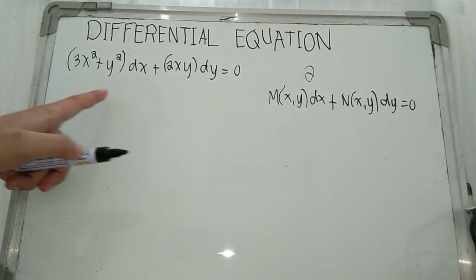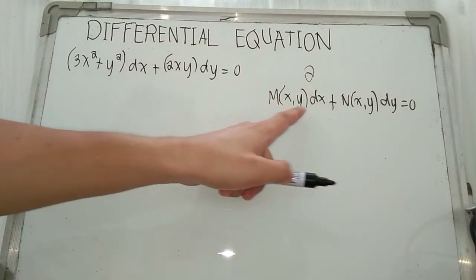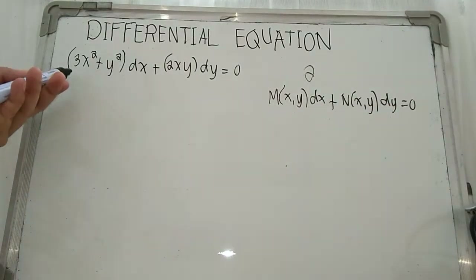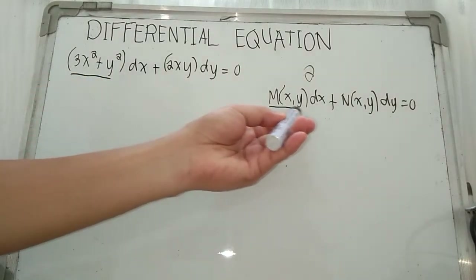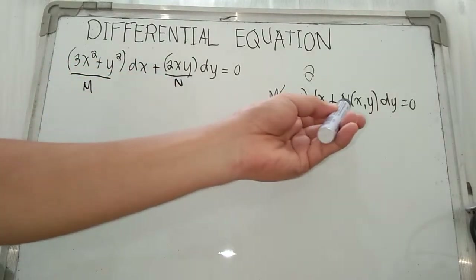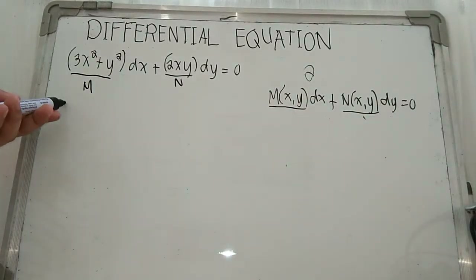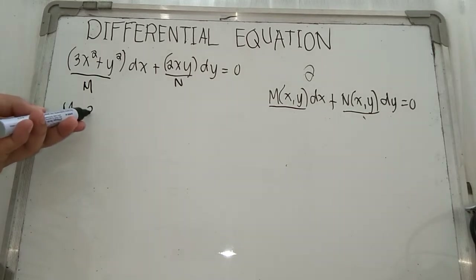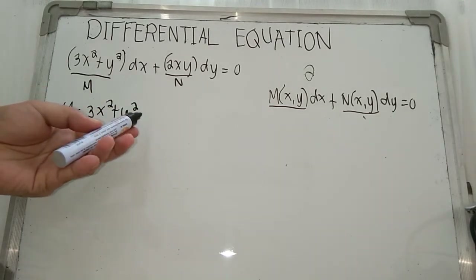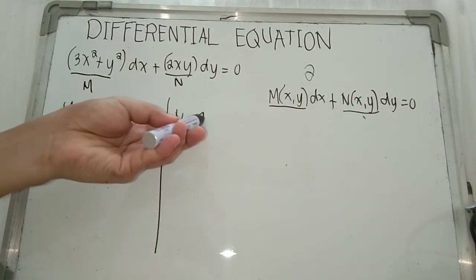Now if you observe our first given differential equation, the M function is the function beside dx and the N function is the function beside dy. Therefore, M is equal to 3x squared plus y squared, and N is equal to 2xy.